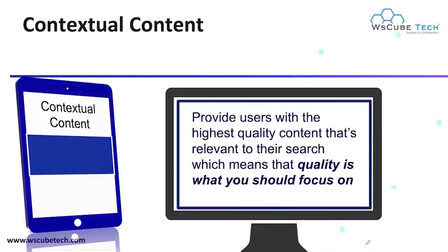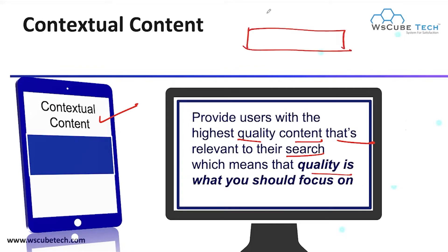The first strategy to boost your semantic SEO is contextual content. What is contextual content? It provides users with high-quality content that's relevant to their search, which means that quality is what you should focus on. In your search engine, whatever query you mention, you can get many results.